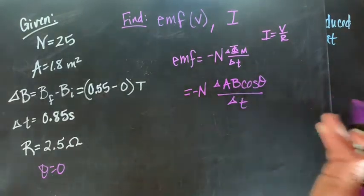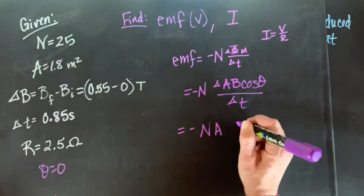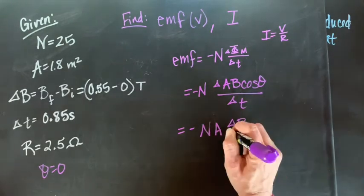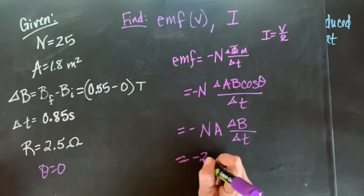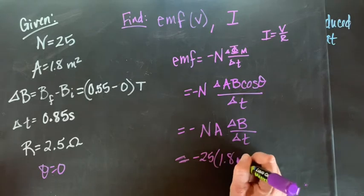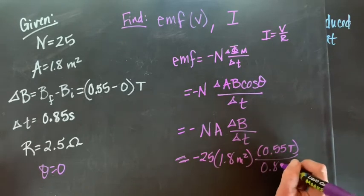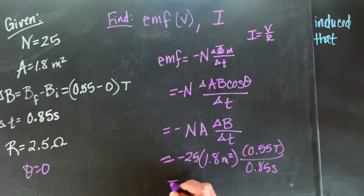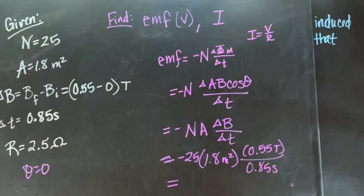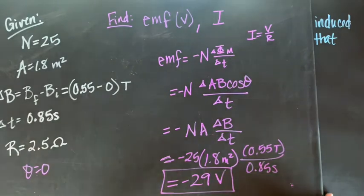Is the area of our loop changing? No. So we can rearrange this again. We get negative N times our area times our change in B, cosine of theta is 1, over delta T. So if we put all that information in, we get negative 25 times 1.8 meters squared times 0.55 tesla divided by 0.85 seconds. When you work that all out, you should get negative 29 volts. So that's the magnitude of our EMF.